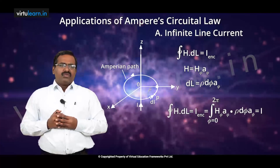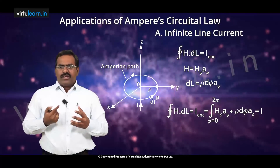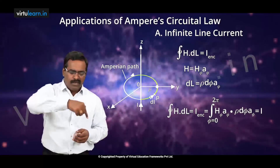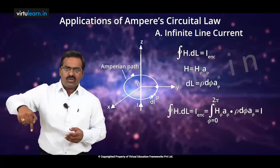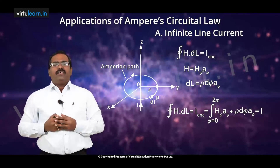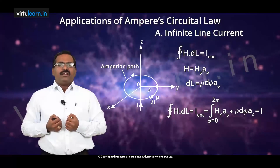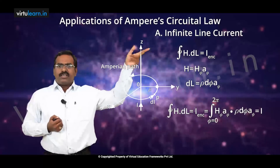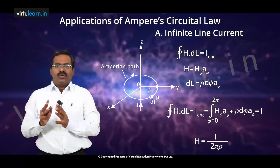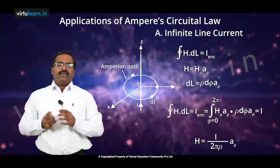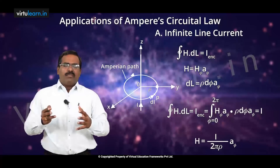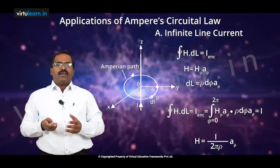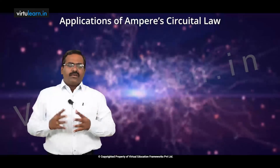Integrating with limits from φ = 0 to 2π, because it is a complete circle, and simplifying, we get the same expression obtained from Biot-Savart law special case 2: H equals i divided by 2πρ into aφ. This is one application of Ampere's circuit law applied to an infinitely long current-carrying conductor.